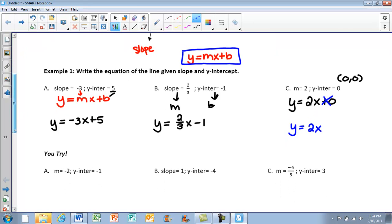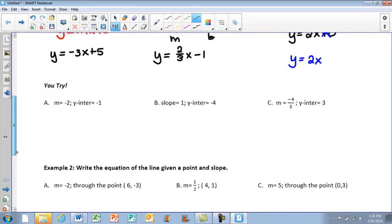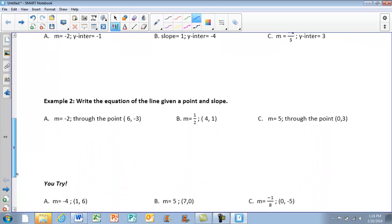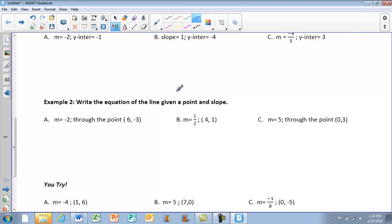Not too bad. All you're really doing is identifying the information that's given and plugging back into that slope-intercept form. So it's extremely important to know that your m is the slope and the b is your y intercept. The U tries we'll save for class tomorrow. Now, if we look at our next example, it says write the equation of the line given a point and our slope.